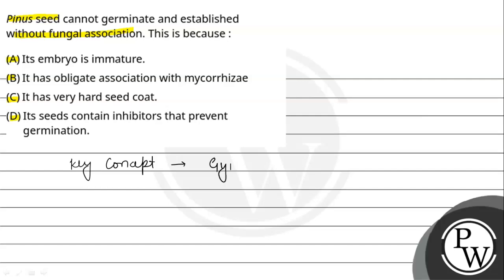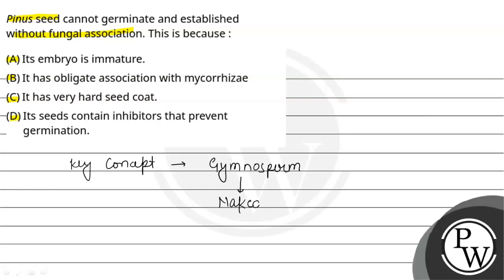Gymnosperms is a Greek word. Gymno means those group of plants that have exposed seeds or naked seeds - they are naked. Whereas angiosperms are flowering plants in the plant kingdom; in angiosperms the seeds are not naked, they are covered.